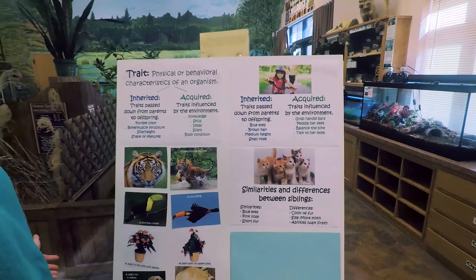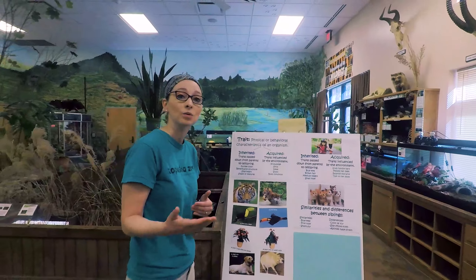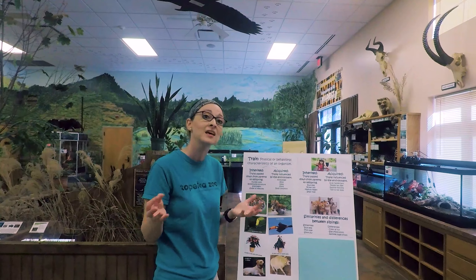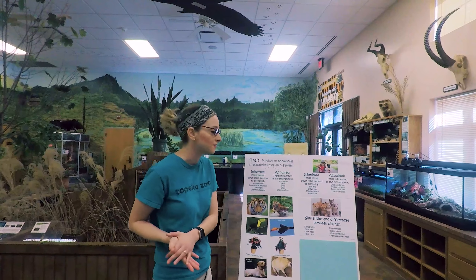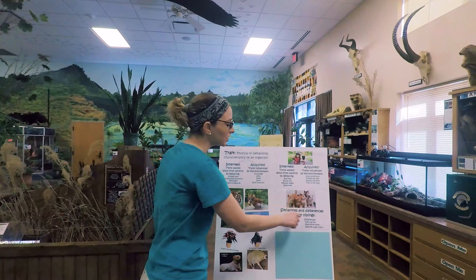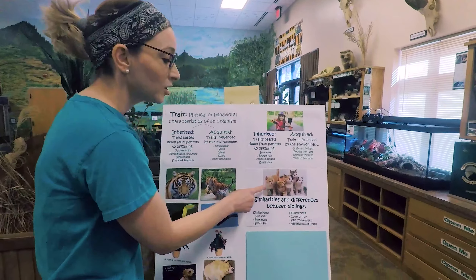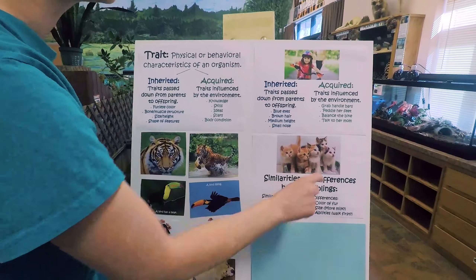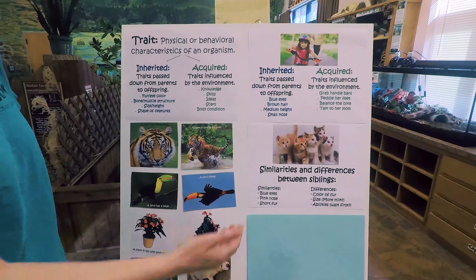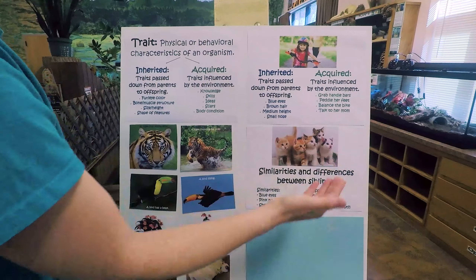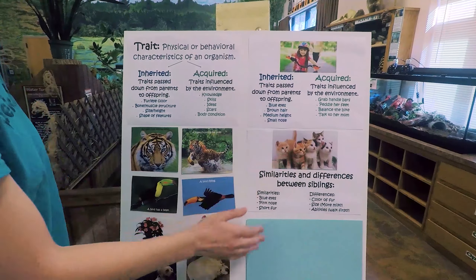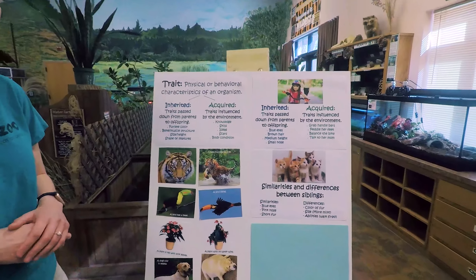Think about if you have a sibling — maybe you are a different height or have different colored eyes or hair, even if you have the same parents. Some of your traits can be different. The same goes for acquired traits. Looking at our kittens, one looks a bit bigger than another — maybe it learned to walk faster, or maybe it got more milk. The abilities of the two can be different as well, and that is affected by the environment.